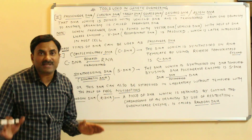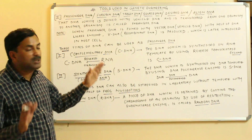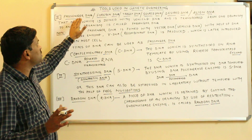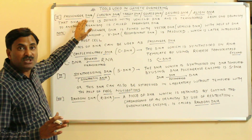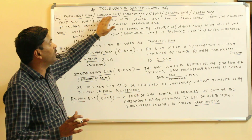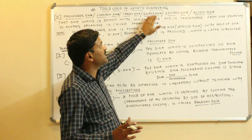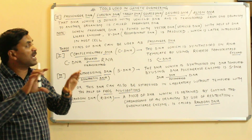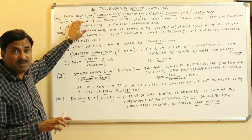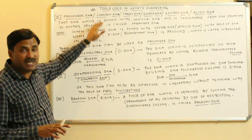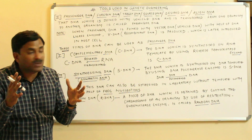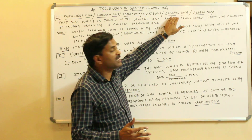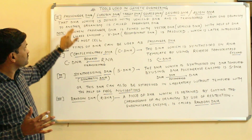Hello to all. Today we are going to discuss a very important tool used in genetic engineering — that is known as the passenger DNA. This passenger DNA is also called the foreign DNA, the target DNA, the source DNA, the desired DNA, or the alien DNA. All are the same names used for the passenger DNA. It is the gene of interest.